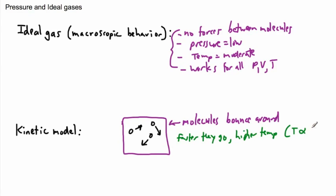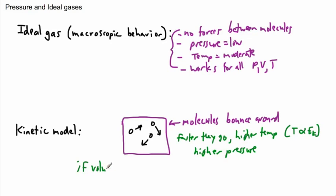Temperature is proportional to kinetic energy — temperature equals some constant times the kinetic energy. That leads to a higher pressure. So if molecules go faster, temperature goes up, and that means more pressure. This also applies to volume — what if we decreased the size of the box?